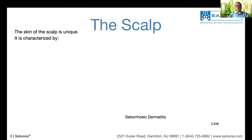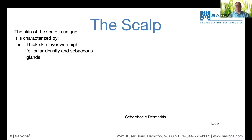Let's start with understanding what is scalp. Scalp is characterized by the following: it's a thick layer of the skin, and it has a high concentration of follicles and sebaceous glands. Sebaceous glands are the glands that produce sebum — oil. This structure makes it very unique.